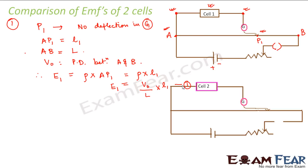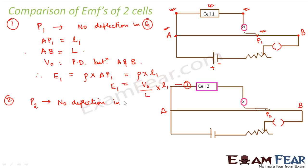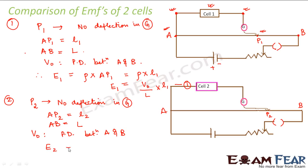Now we remove cell 1 and put cell 2 in place of cell 1. This cell has a different EMF, maybe E2. We again start moving the jockey to reach a point where there is no deflection of the galvanometer. Let us call that point P2 — at point P2 there is no deflection. Let us call the distance AP2 as L2, and we already know AB equals capital L and V0 is the potential difference between A and B. Therefore E2 = (V0/L) × L2. This is equation 2.